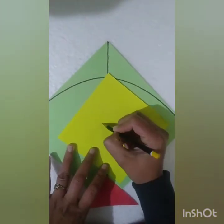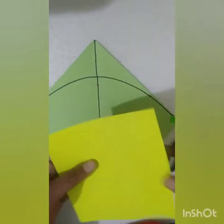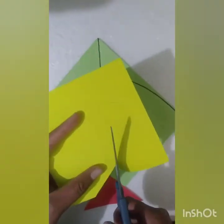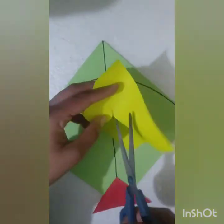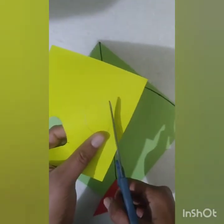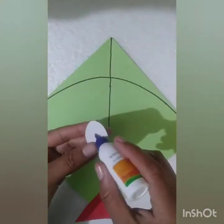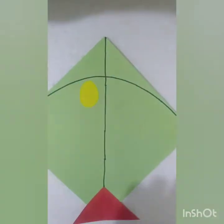Now children, take an origami sheet and cut it into an oval shape like this. Now children, we will paste the oval shape like this.